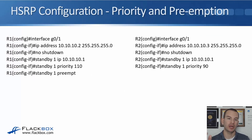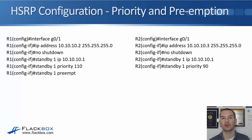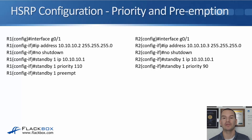For configuration, on R1 — our preferred router — we do the normal HSRP configuration first on interface GigabitEthernet 0/1, with IP address 10.10.10.2 and no shutdown. We then have our HSRP command: standby 1 IP 10.10.10.1, and the additional commands standby 1 priority 110 and standby 1 preempt. On R2, we have the normal interface configuration with IP address 10.10.10.3 and no shutdown, standby 1 IP 10.10.10.1 with standby 1 priority 90.